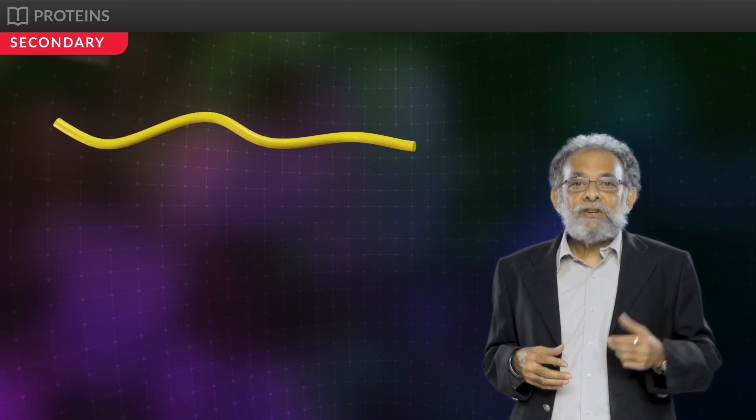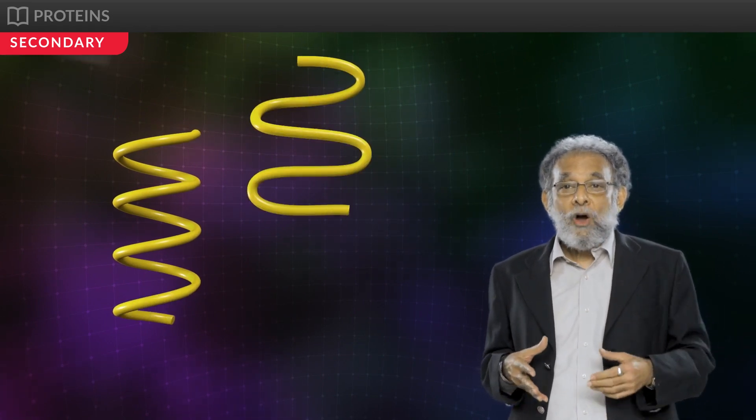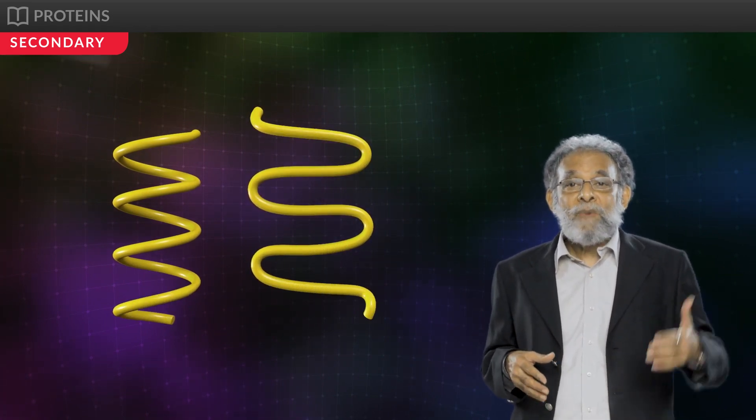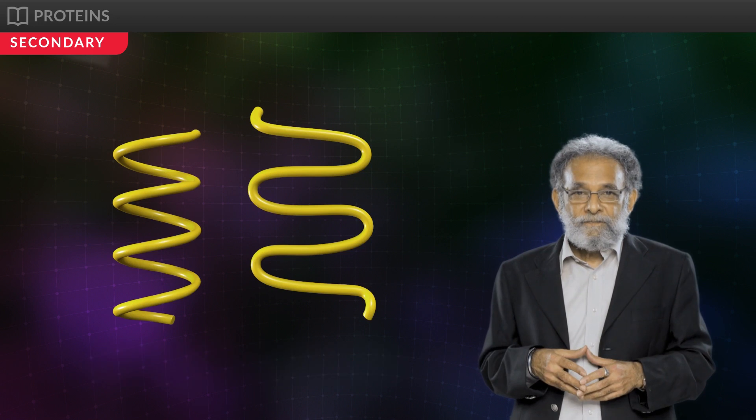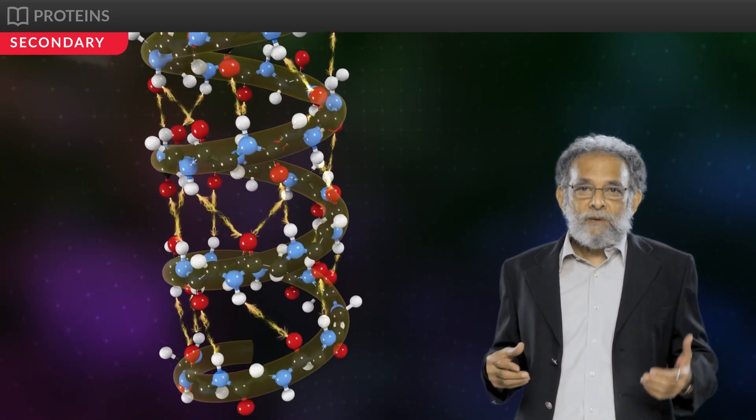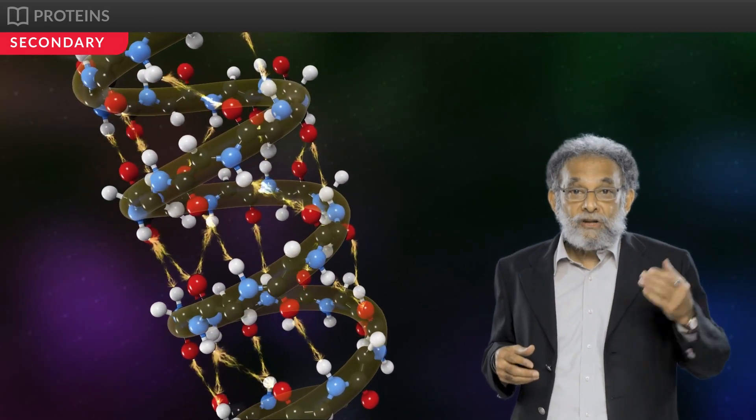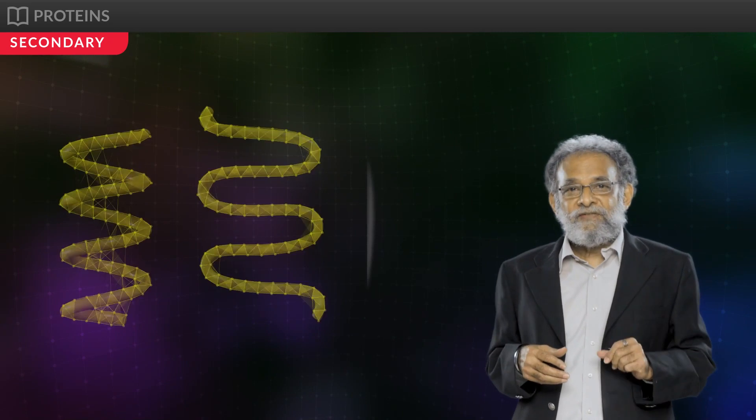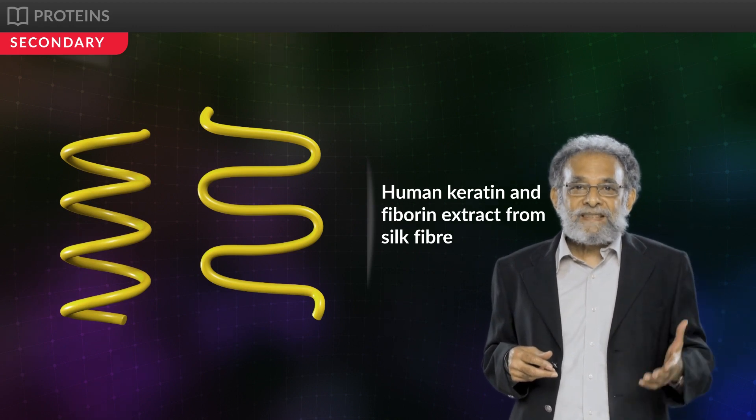In secondary structure, some amino acids of the polypeptide chains are linked together and bend due to heaviness of the molecule. They either bend to form helix or beta pleated sheets to form alpha helix and beta sheet secondary structures, respectively. In alpha helix, there is an intramolecular hydrogen bond formation between the amino acids, thereby giving the polypeptide a right-handed helix or spiral shape. Such alpha helix is seen in human keratin and fibroin extracted from silk fiber.